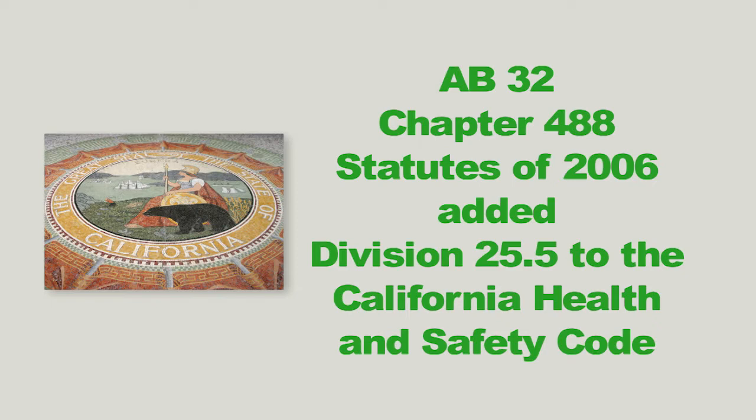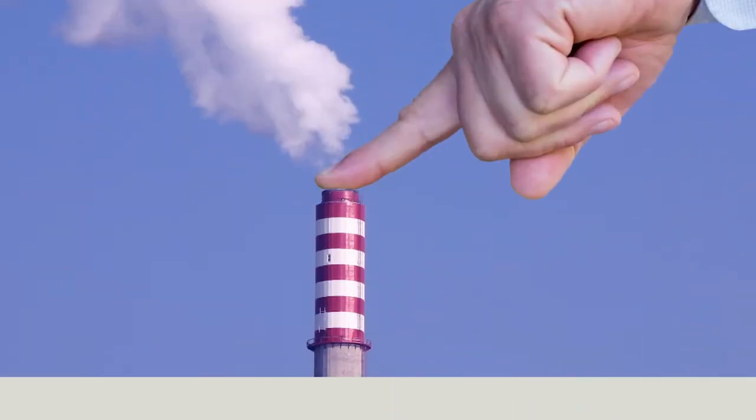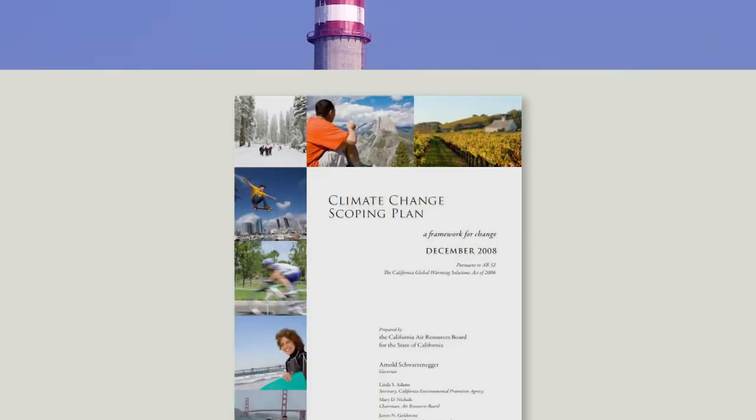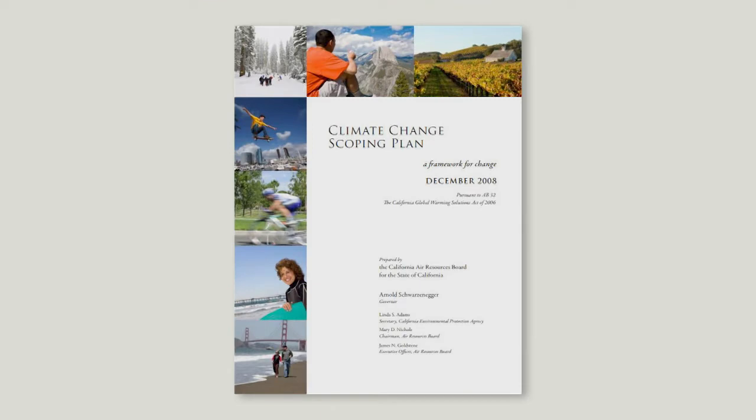AB 32, Chapter 488 Statutes of 2006, added Division 25.5 to the California Health and Safety Code and established law requiring a comprehensive program for reduction of greenhouse gases to 1990 levels by the year 2020. Notably, the AB 32 Scoping Plan identified buildings as the second largest source of California's greenhouse gas emissions.